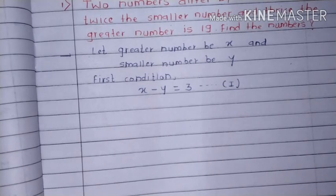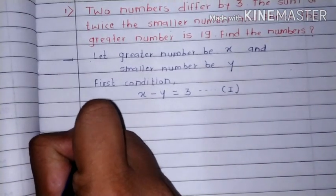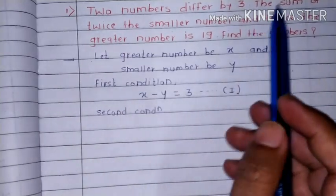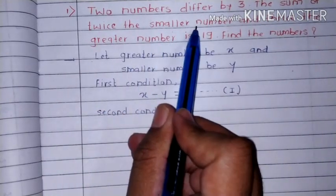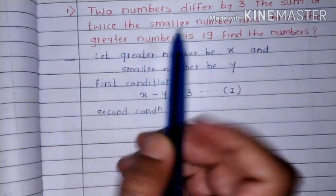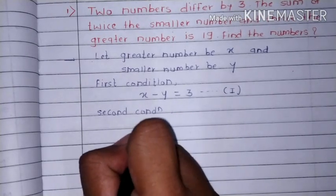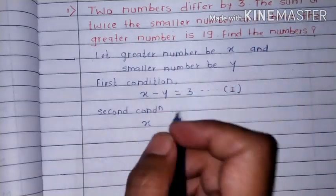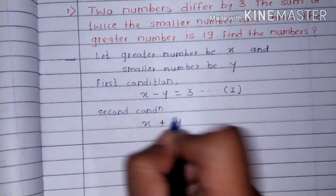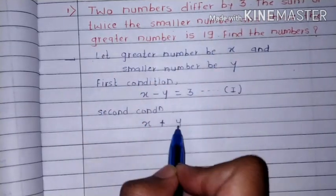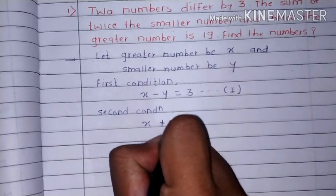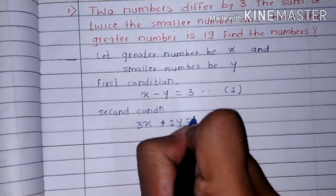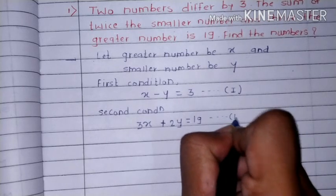Now second condition: the sum of twice the smaller number and thrice the greater number is 19. So 3x plus 2y is equal to 19. This is equation number two.